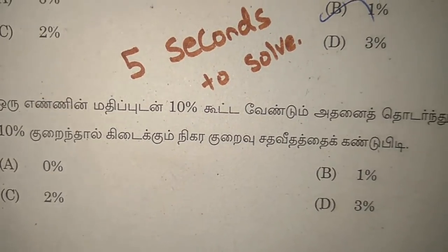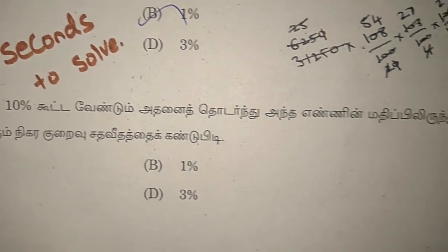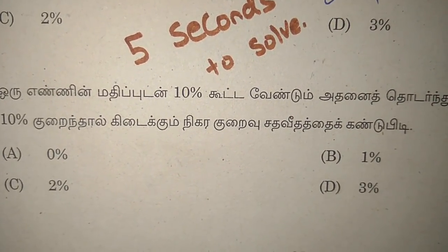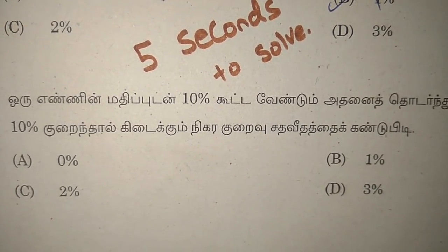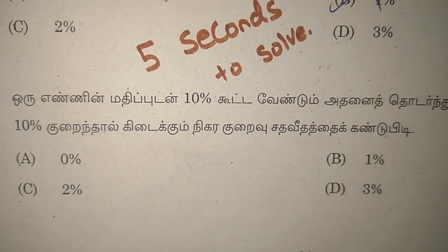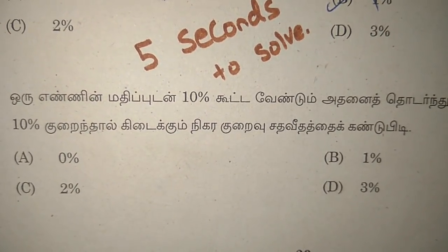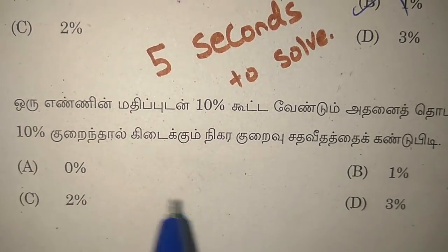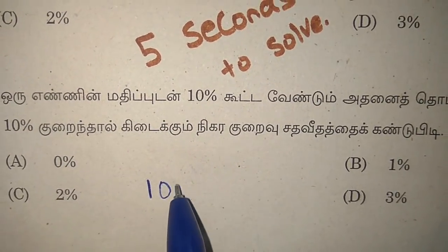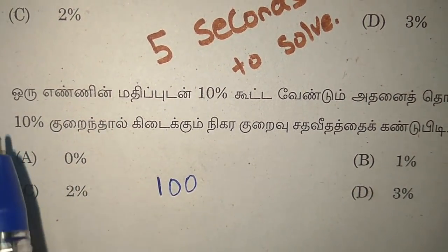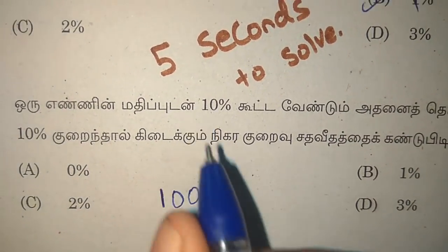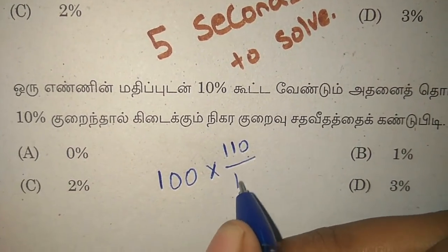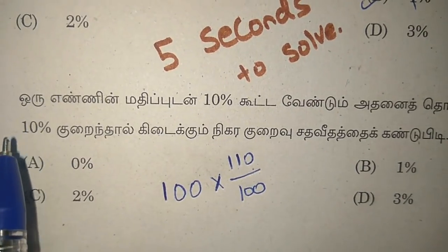We will have a number of 1. We take the same 10 to 10, and we take the same 110 by 100. We have 10 to 10. Now, how much is it? We take the same 100.